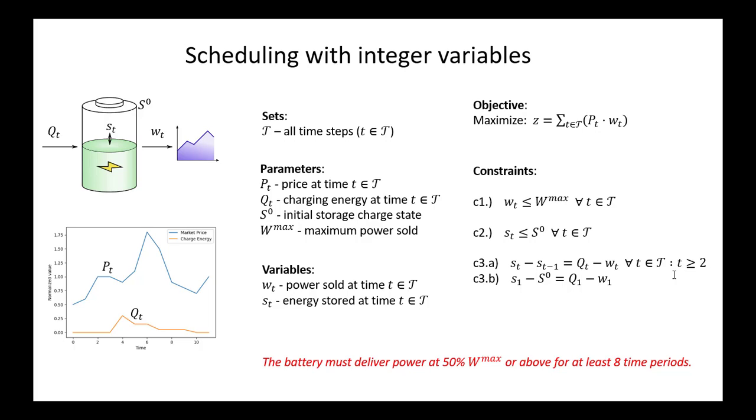If you think about what this implies, it means that we need to not only keep track of how much energy is being produced, this continuous variable W, and the state of energy storage S, we also need to be keeping track of a state in the system that is whether or not the battery is providing power. It's sort of a binary thing, right? So we're going to be introducing a binary variable, an integer variable that is limited to the set of zero or one.